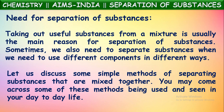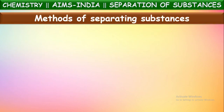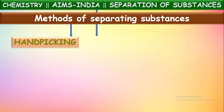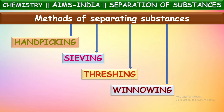Let us now discuss some simple methods of separating substances that are mixed together. You may come across some of these methods being used in our day-to-day life. The different separation methods we use include hand picking, sieving, threshing, and winnowing.